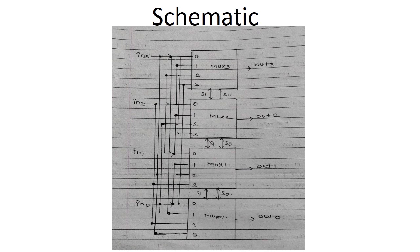So let us start. This is the simple schematic of the 4-bit barrel shifter circuit. We are using 4 multiplexers whose size is 4-to-1, from MUX3 to MUX0. Accordingly we have output lines: output 3, output 2, output 1, and output 0.